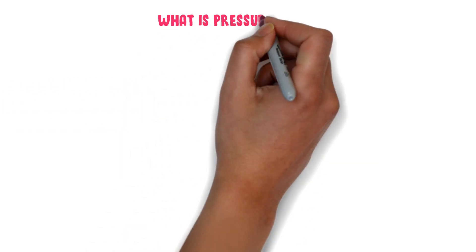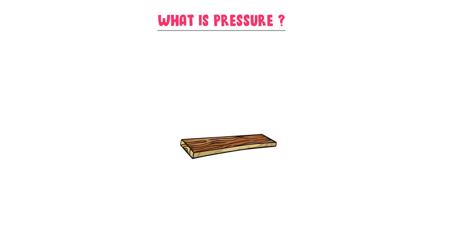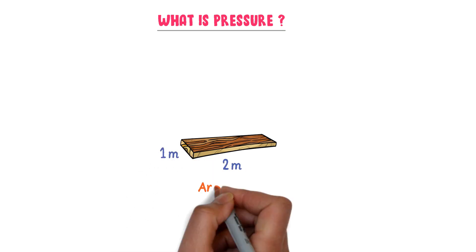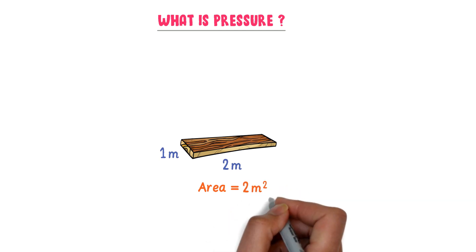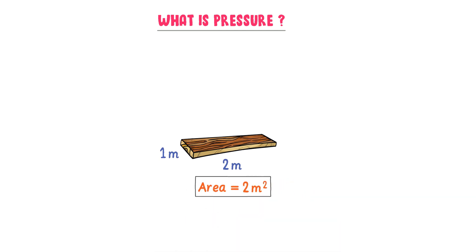Firstly, let me teach you what is pressure. Consider a wooden sheet. Let the length of this wooden sheet be 2 meters and its width be 1 meter. So the area of this wooden sheet is 2 meters into 1 meter, which is equal to 2 meter squared. Now there is a ball of mass 0.5 kg above this wooden sheet.